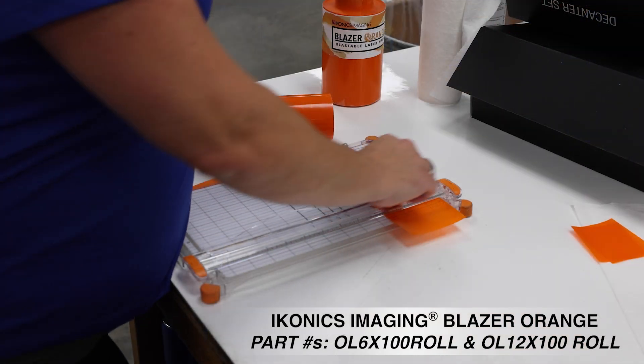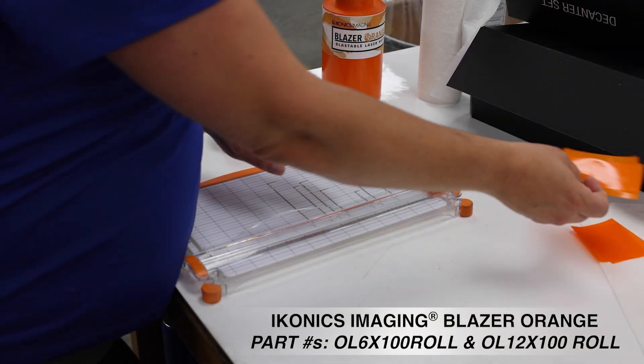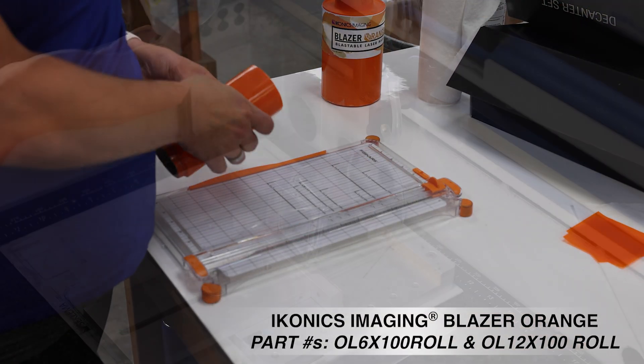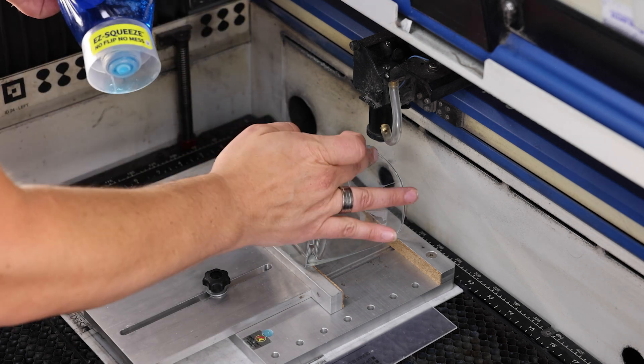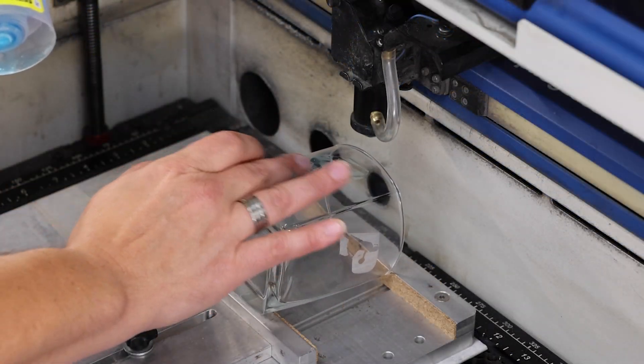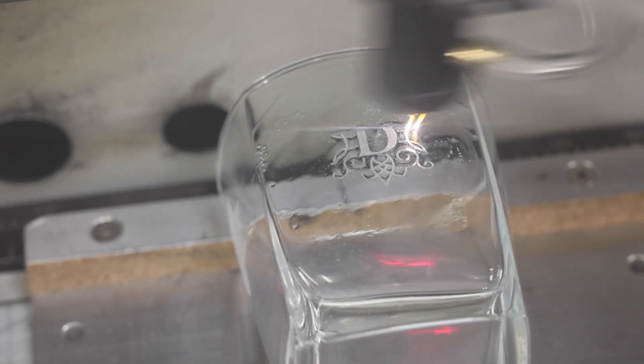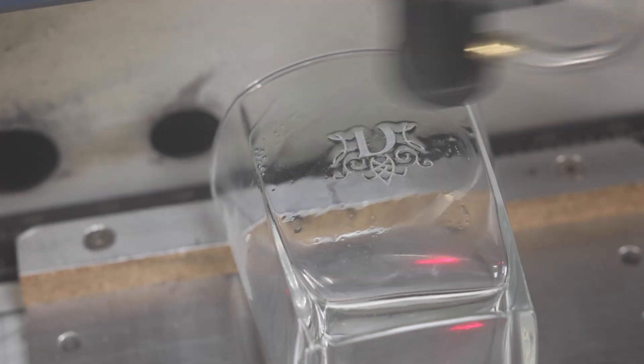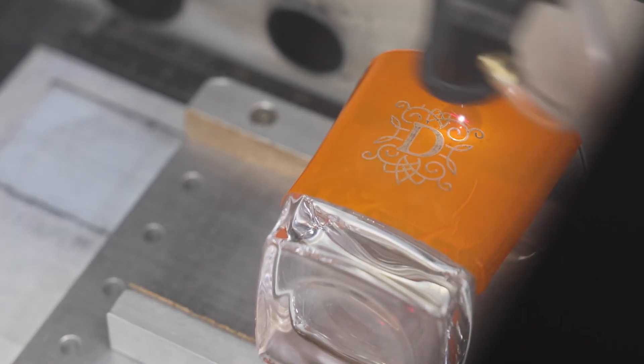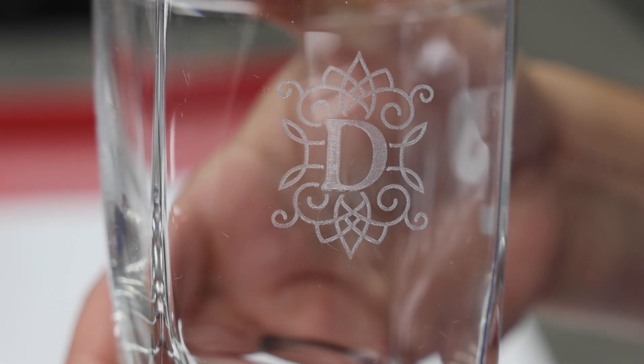Then I'm going to take my Blazer Orange, which I pre-cut to a little larger than my design. You may have heard of putting things like wet newspaper or dish soap on your glass before engraving. Many find that works just fine for them, but whether it be soap or Blazer Orange, the end goal is to help disperse that heat of the CO2 laser as it's hitting your glass.